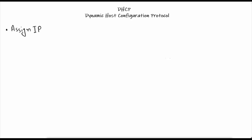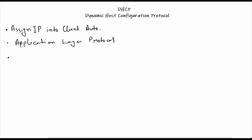DHCP is Dynamic Host Configuration Protocol. The basic fundamental of DHCP is to assign IP addresses to client machines automatically. Secondly, DHCP is an application layer protocol, meaning it is a Layer 7 protocol. DHCP works on a client-server based model, meaning there will be a server and client responsible for the communication in this protocol.